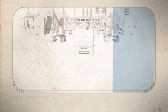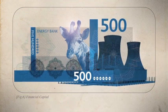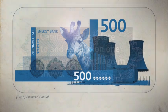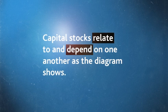And finally, financial capital, the means of representing other forms of capital such as shares, bonds or banknotes. All these capital stocks relate to and depend on one another, as the diagram shows.